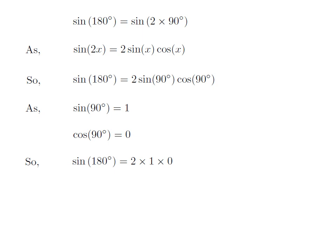Let us replace the values of sin(90°) and cos(90°) in the expression of sin(180°). So we get sin(180°) = 2 × 1 × 0.